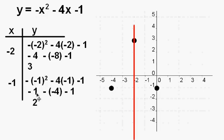Negative 1 squared is 1, so the negative sign makes it negative. 4 times negative 1 is negative 4, and then negative 1 minus negative 4 is the same thing as negative 1 plus 4, so that's 3. Minus 1 gives me 2.